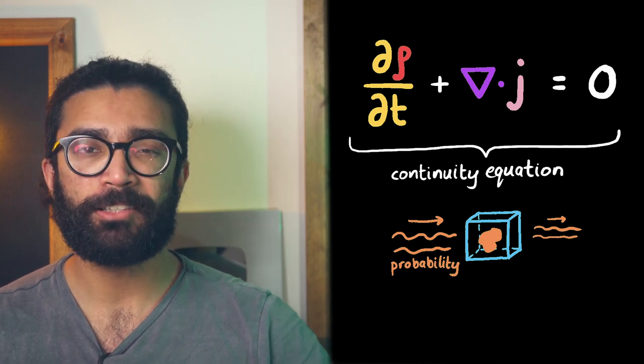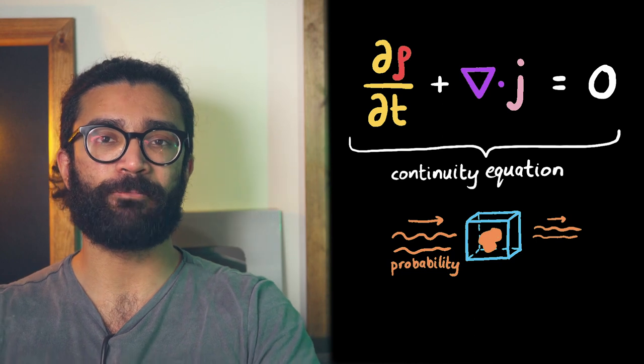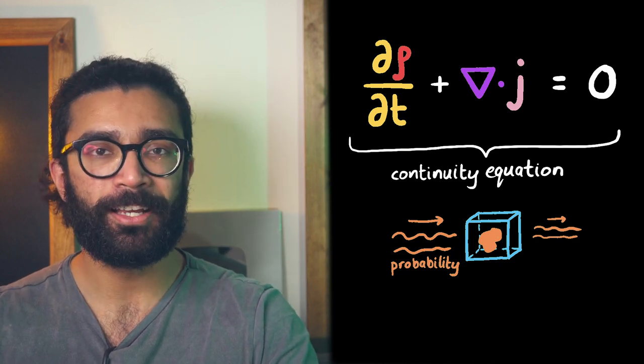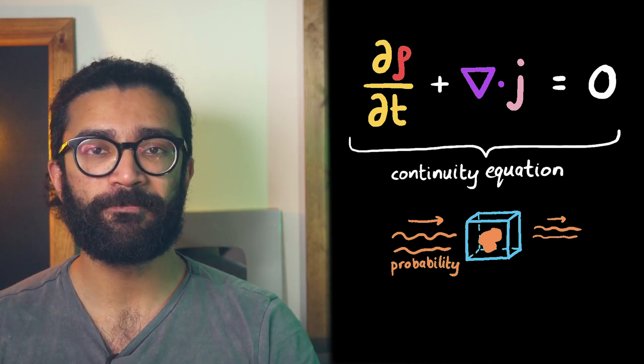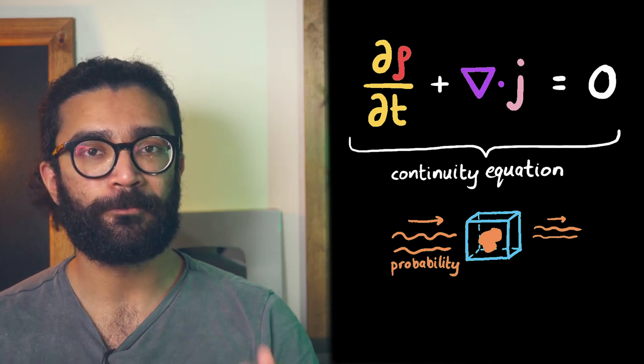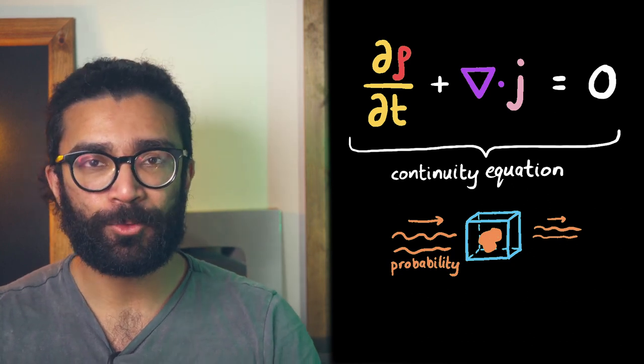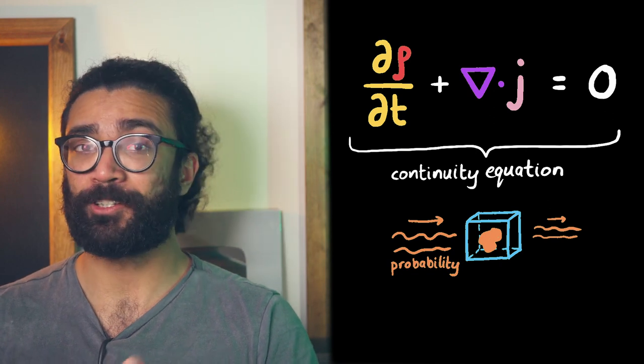But if we think about how a real system should behave in terms of its probability and how that changes over time, then it seems to make sense. And of course, if we do a lot of mathematics using quantum theory, we find out exactly the same thing. And this is why we can talk about the flow of probability and almost treat this weird abstract concept like a physical fluid.